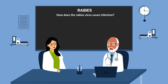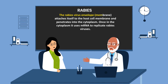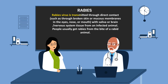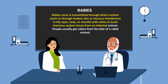How does the rabies virus cause infection? The rabies virus envelope or membrane attaches itself to the host cell membrane and penetrates into the cytoplasm. Once in the cytoplasm, it uses messenger RNA to replicate rabies viruses. Rabies virus is transmitted through direct contact such as through broken skin or mucous membrane in the eyes, nose, or mouth, or through saliva or brain or nervous system tissue from an infected animal.